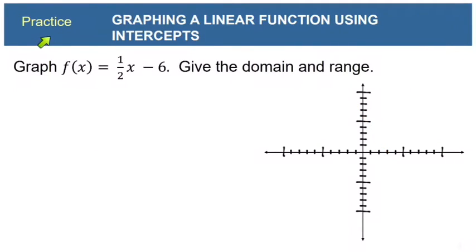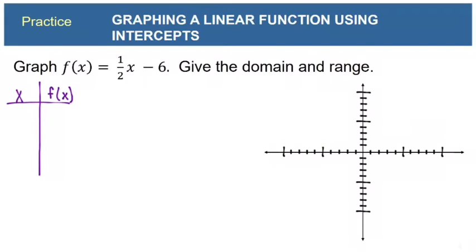Here is a practice problem. Graph f(x) equals one-half x minus 6 and give the domain and range. Just like last time, we'll plug in a couple of x values and calculate the x-intercept. Plugging in 0 for x: one-half times 0 is 0, minus 6 gives negative 6. So we have the point (0, negative 6) on our line.